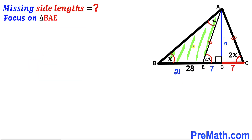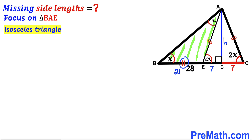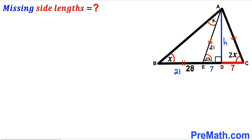Now let's focus on triangle BAE. We can see that this is an isosceles triangle since angle BAE equals angle ABE, both equal to X. Therefore side BA is equal to side BE. Since BE is 21, side BA is 21 units as well. And since AE and AC are congruent, AC is also 21 units. So our missing side length AC turns out to be 21 units.